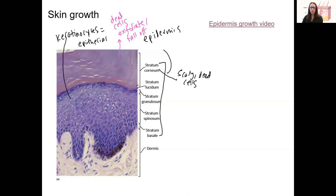So this is because the stratum corneum is made up of dead cells that are very scaly and full of keratin, they are keratinized.